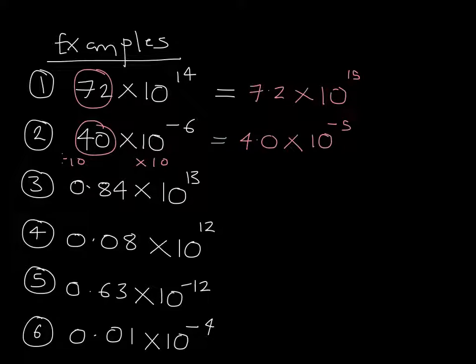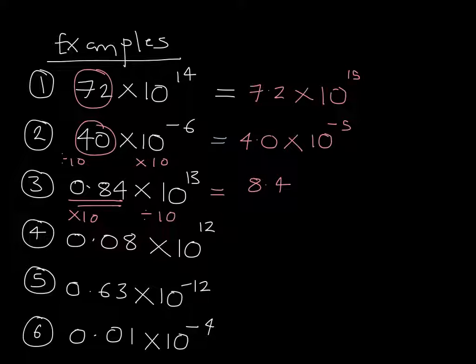Question 3: this time we have 0.84, which is below 1. We need to make this 8.4. To do that, we've multiplied by 10, which means the other part of the number has to be divided by 10. This means that 10 to the power of 13 is being reduced by a power of 10, i.e. its power is going to become less positive — it's going to become 10 to the power of 12.